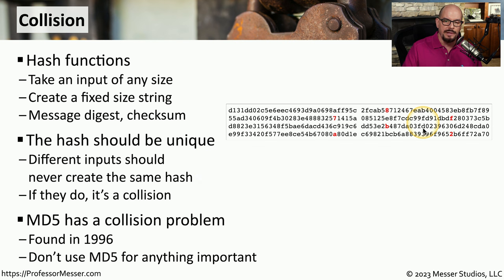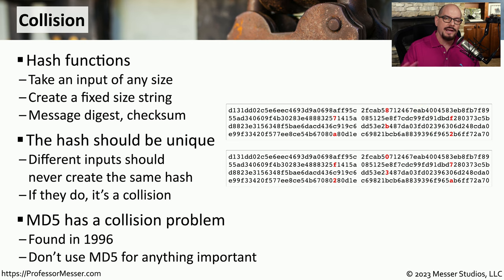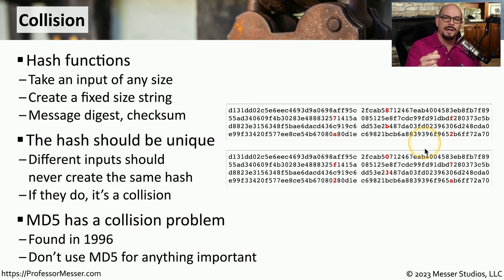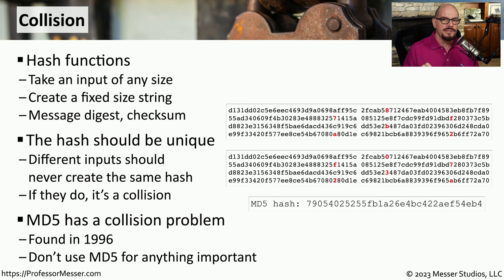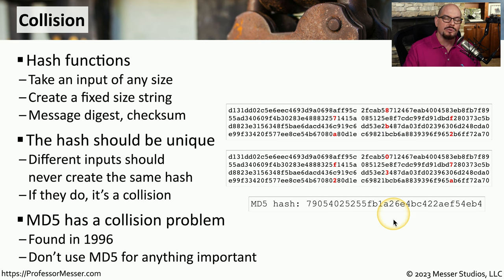Here's how this MD5 collision works. Here we have a string of input — text that we're going to put into the hashing algorithm — and we're going to take another string of text that's almost the same. You can see these almost match up, but every place there is a red character means there's a slight difference between each of these inputs. But if we take both of those inputs and put them into the MD5 algorithm, we get exactly the same hash. This is a collision, and this is the reason we no longer recommend using MD5 as a hashing algorithm.